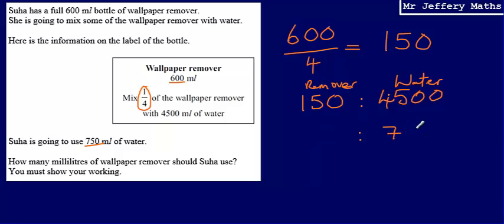So what we now need to do is work out what have we done to this part of our ratio to get from 4,500 to 750. We've divided it by something. The way I'm going to work out what I've divided that by is by saying this is going to be 4,500 divided by 750.